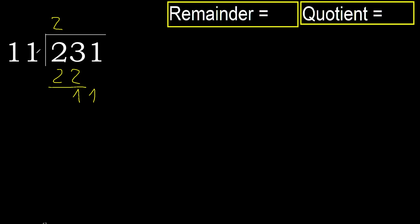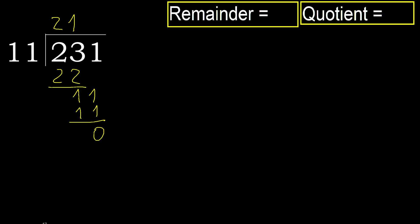11 multiplied by 2 is greater. Multiply by 1. 11 is not greater, subtract, next. There is no number remaining, therefore finish.